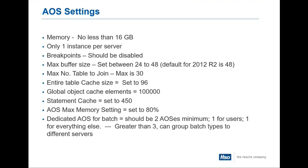Max buffer size — set that between 24 and 48. For the R2s out there, your default is 48. Max number of tables to join — the maximum is 30. Some of the customizations we see can get some pretty crazy joins in there. Entire table cache size is set to 96 — so 96 tables that are being cached. It's all about memory management at this point. Global object cache elements is set to 100,000. And statement cache is set to 450. A lot of this is around memory management and enforcing the AOS to go get the next one instead of holding onto memory.